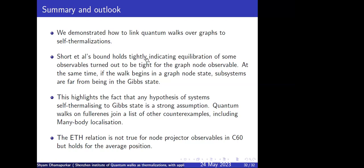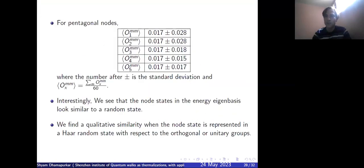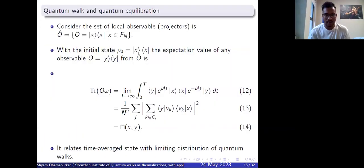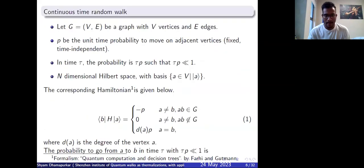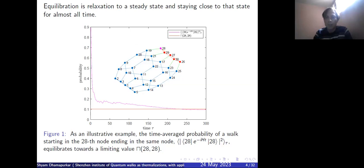That was a great talk. Unfortunately our audience left, but I will ask a question. Do you have a picture to show for your subsystem and bath on your graph? Yes — as shown in the first example, the pentagon basically represents the subsystem and the rest of the graph nodes represent the bath. The blue-green edges represent the interaction between them.